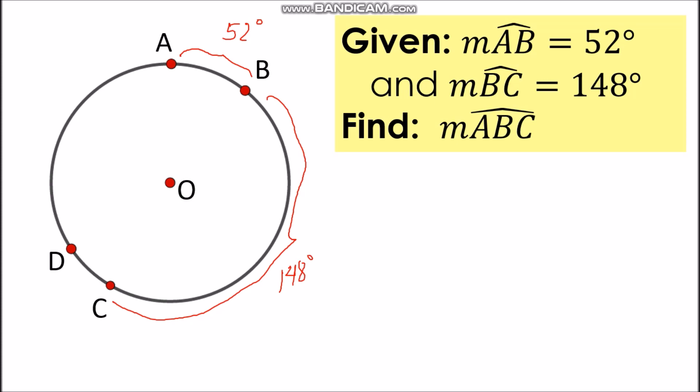So similar with the previous example, arc ABCD is made up of two arcs which are arc AB and arc BCD. Now we can apply the arc addition postulate and say that the measurement of arc AB plus measurement of arc BCD is equal to measurement of arc ABCD.